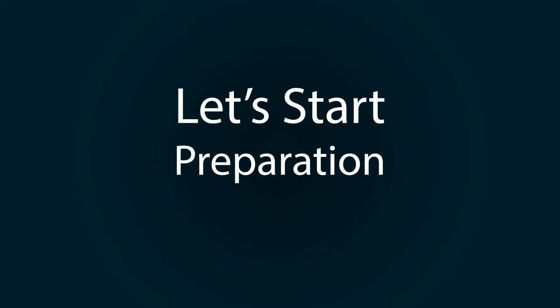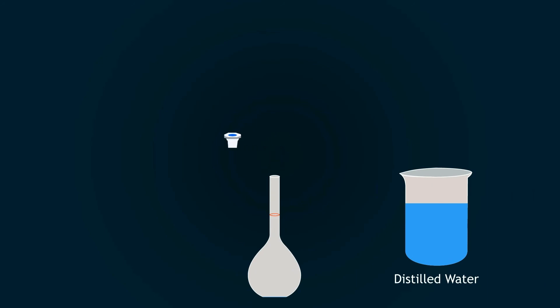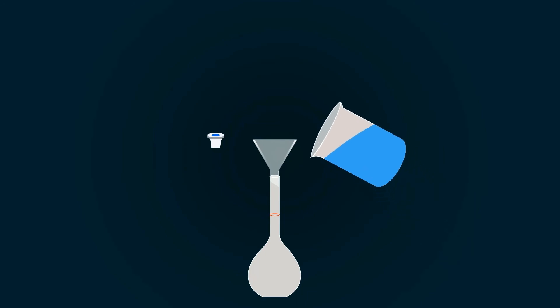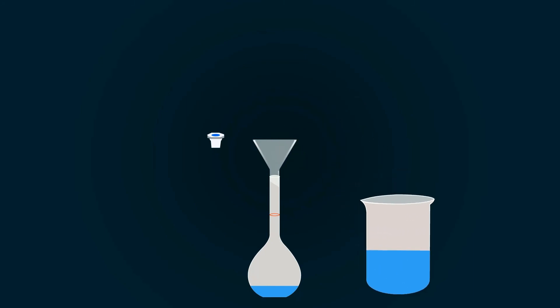Let's start our preparation. First, take a volumetric flask and add some distilled water into the flask with the help of a funnel. While handling concentrated acids, please add some distilled water into the volumetric flask before adding any kind of concentrated acid.